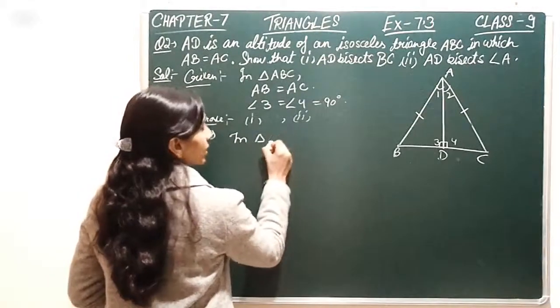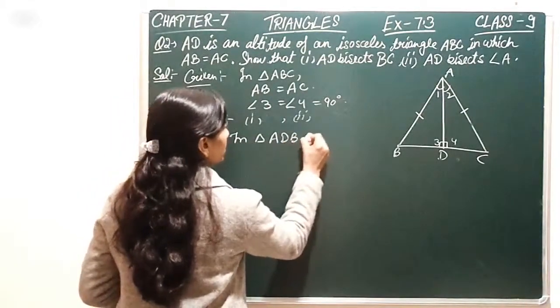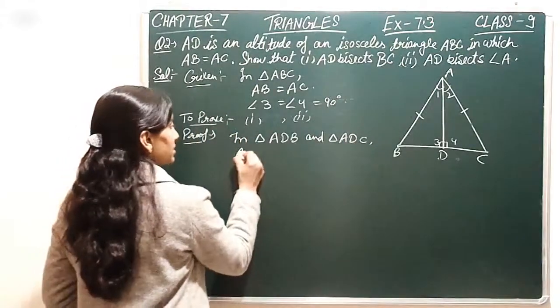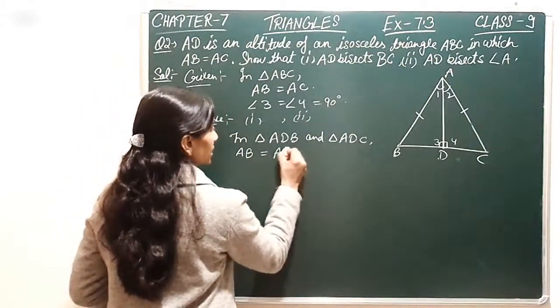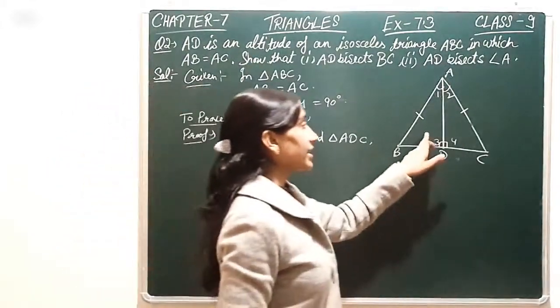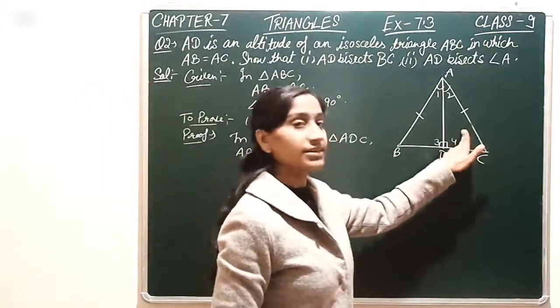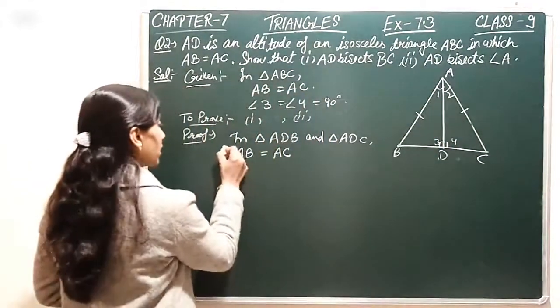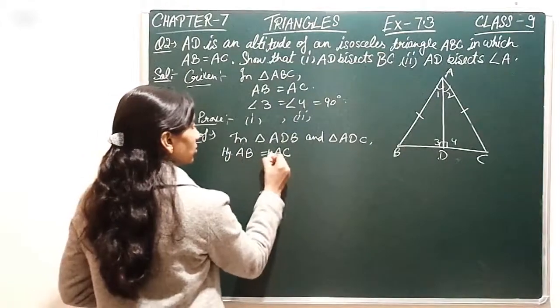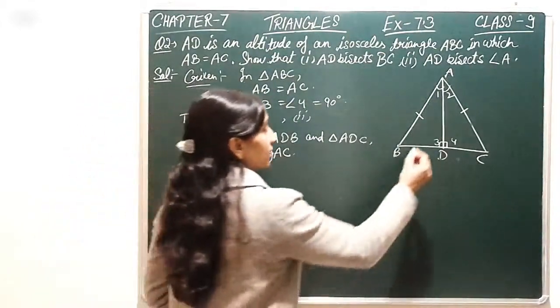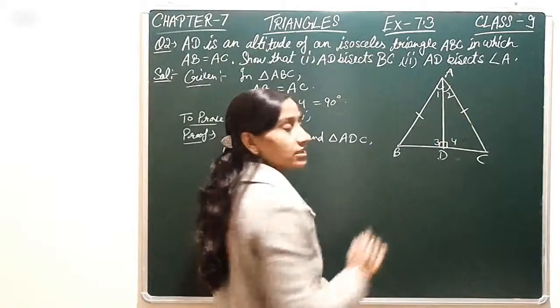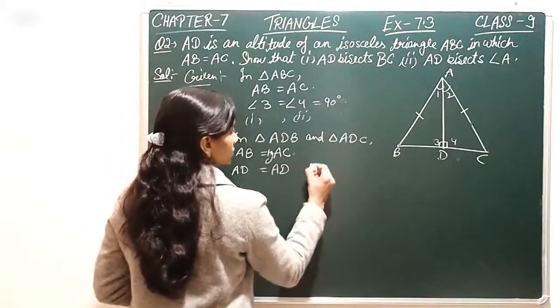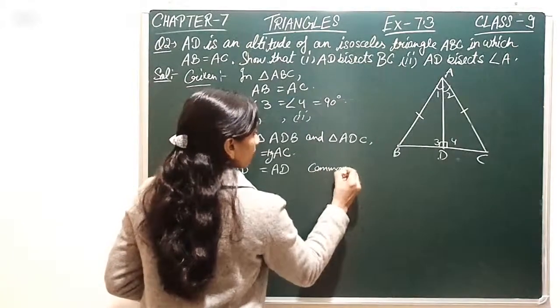In triangle ABD and triangle ADC, we have AB is equal to AC. So if we remember that this is right angle triangle and this is right angle triangle, AB and AC are both hypotenuse. So here we have hypotenuse equal to here.